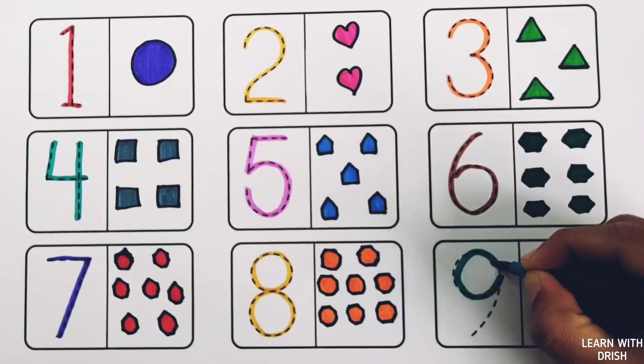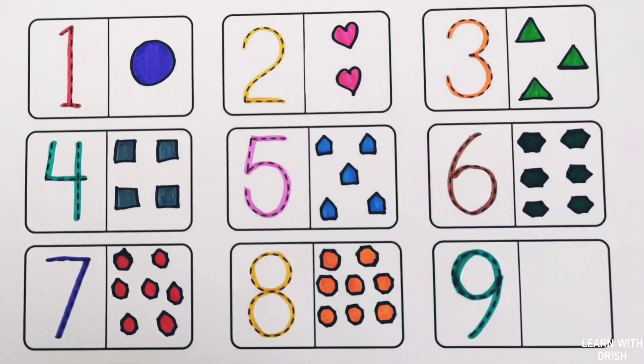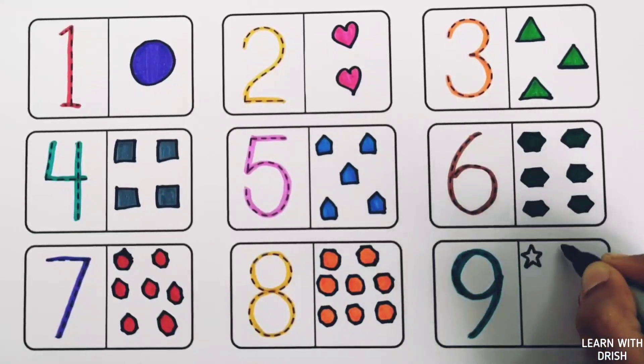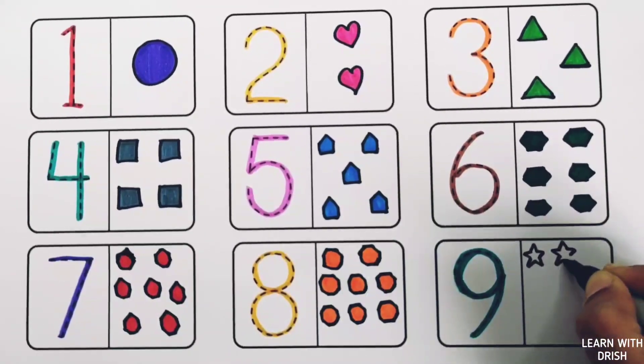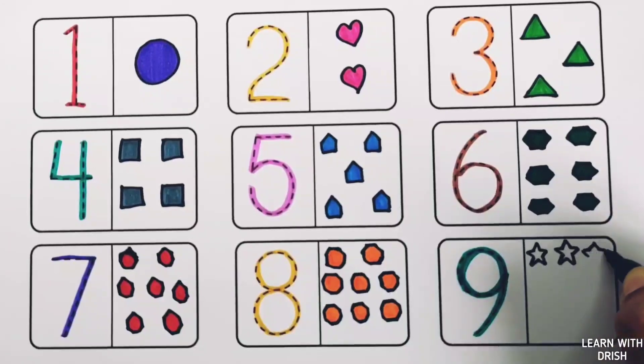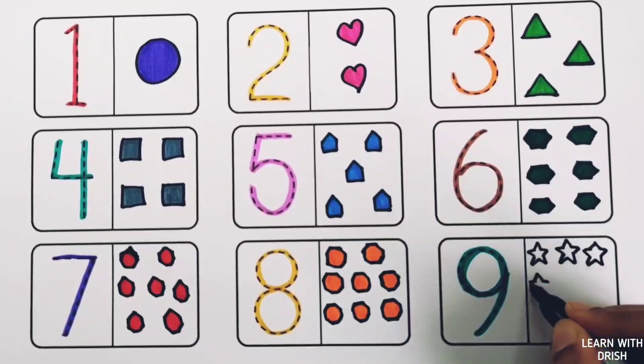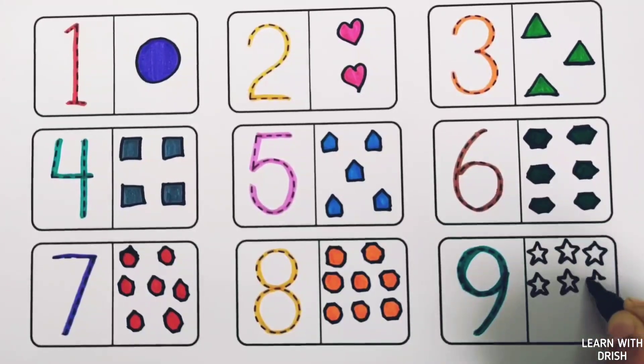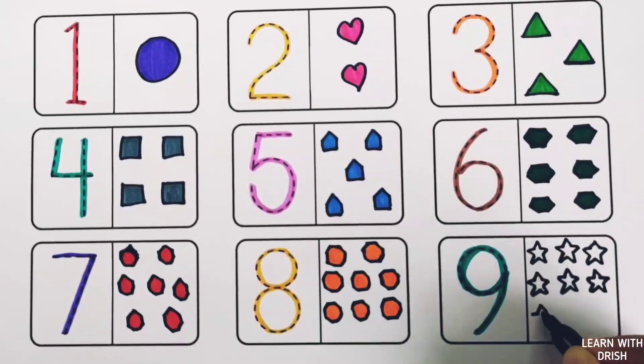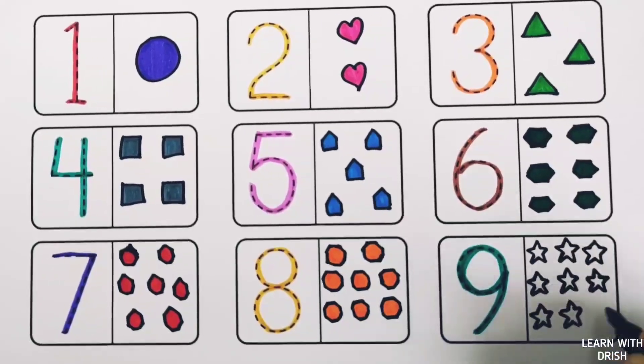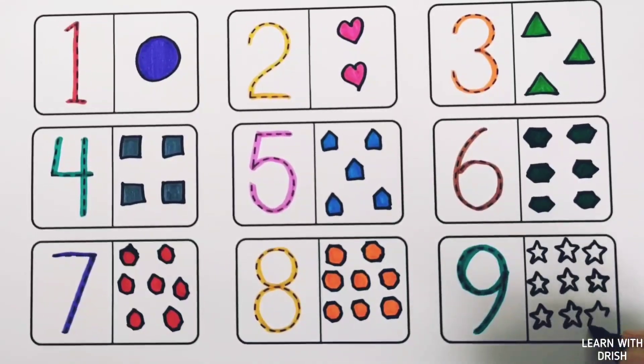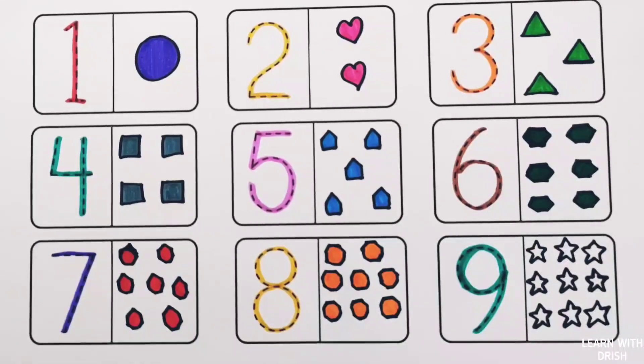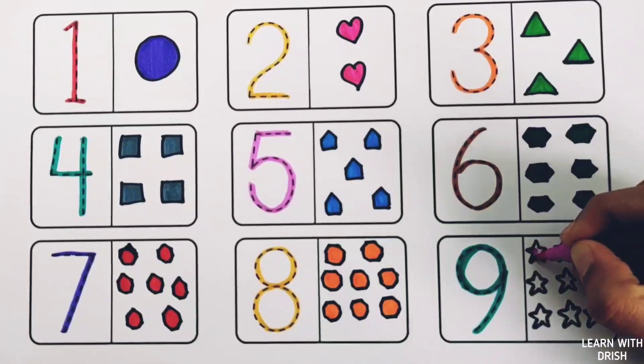Nine. Number nine. One, two, three, four, five, six, seven, eight, nine. Nine stars, purple color.